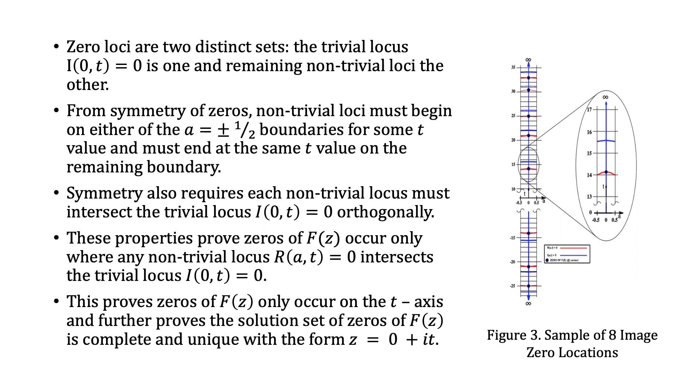This proves zeros of F(z) only occur on the t-axis and further proves the solution set of zeros of F(z) is complete and unique with the form z = 0 + it.